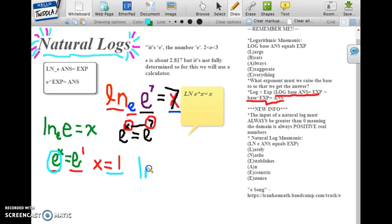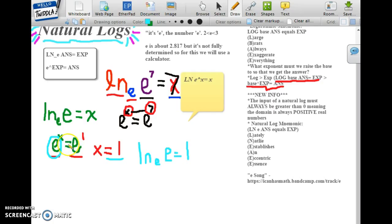Natural logs are just logs with the base of e. The number e, more than two less than three, is a constant transcendental number. Now like the song said, e is an integer between more than two and less than three.